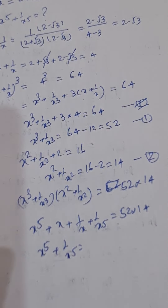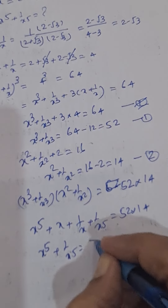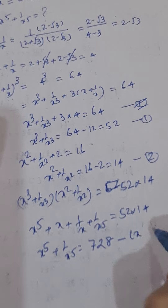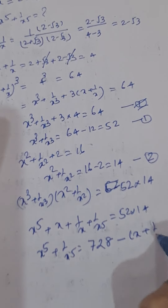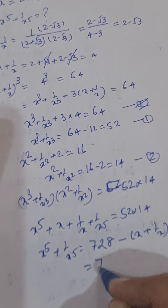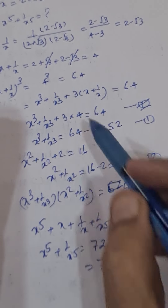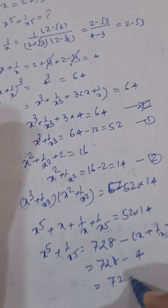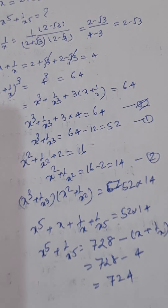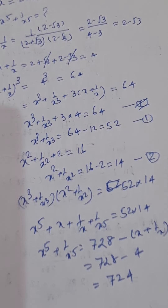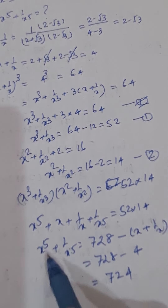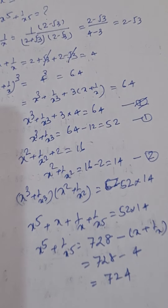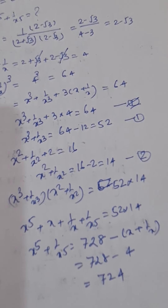52 into 14 is equal to 728, minus x plus 1 upon x which is 4, so this is 724. So dear friends, this is how we can find out x to the power 5 plus 1 upon x to the power 5. Thank you very much, kindly subscribe to this channel.